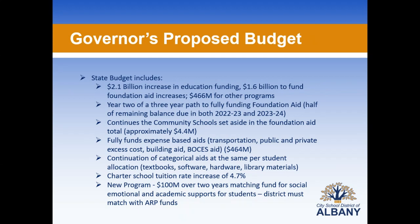The Governor's proposal included a $2.1 billion increase in education funding: $1.6 billion dedicated to Foundation Aid increases and $466 million for other programming. We are in year two of a three-year path to fully funding Foundation Aid. We are continuing the community school set-aside in Foundation Aid for Albany, which is about $4.4 million. The Governor's proposal also fully funds expense-based aids such as transportation, public and private access costs, building aid, and BOCES aid.